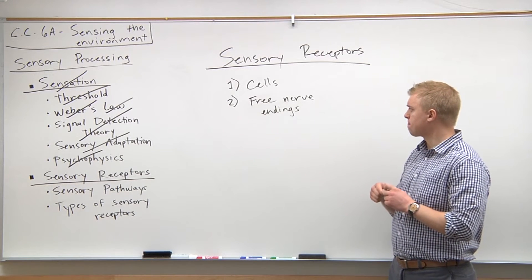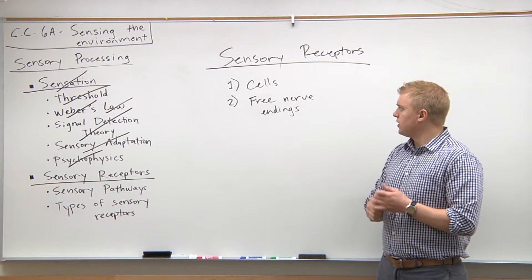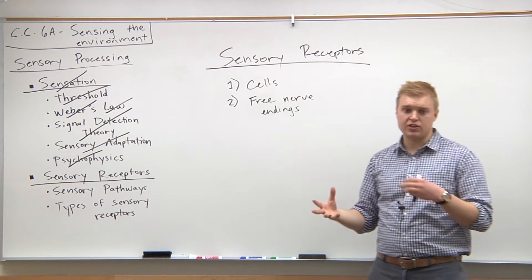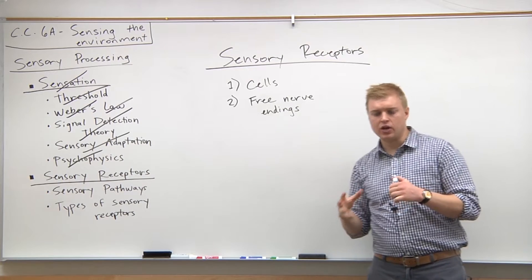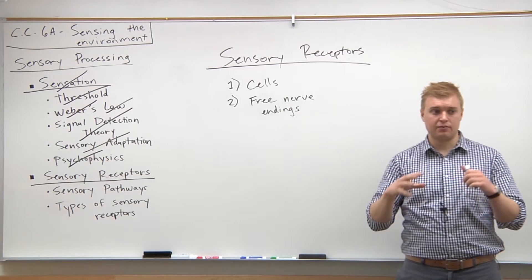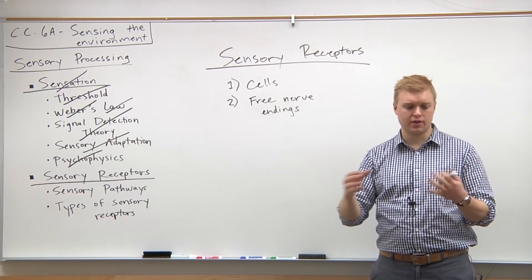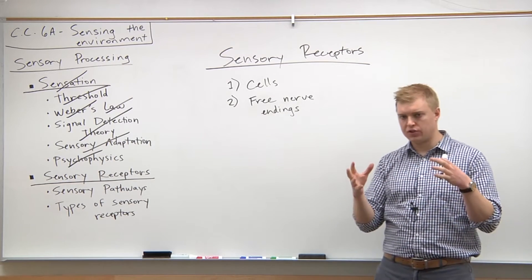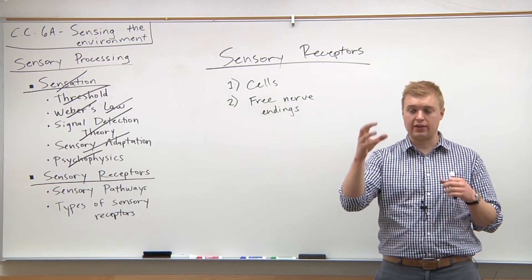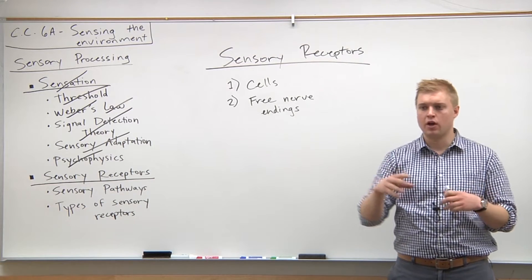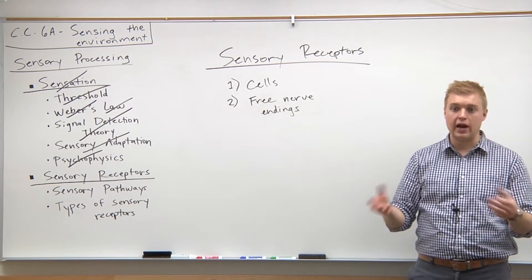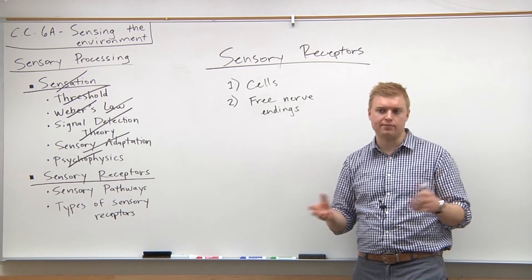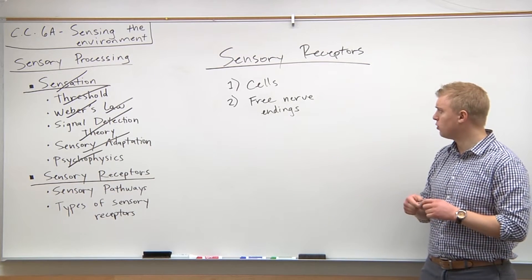The cool thing about these sensory receptors, being specialized neurons, is that they not only detect the presence of a stimulus but also the size, shape, and color of it. So when you see a light, you don't just detect that there is a light, but also its color, how big it is, how bright it is, and the shape of it.